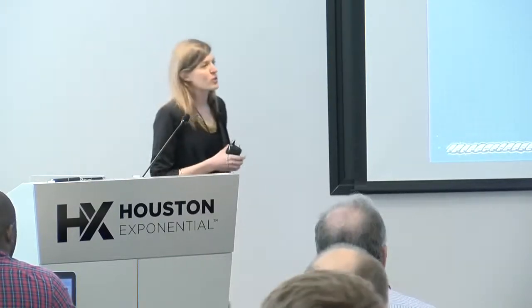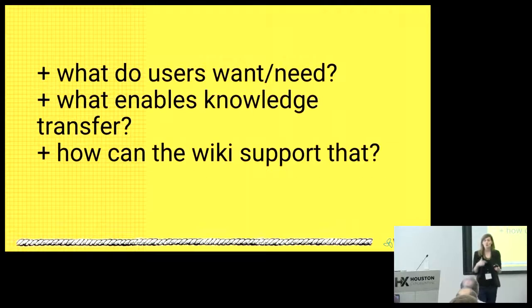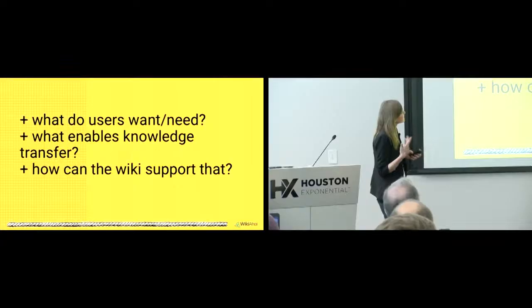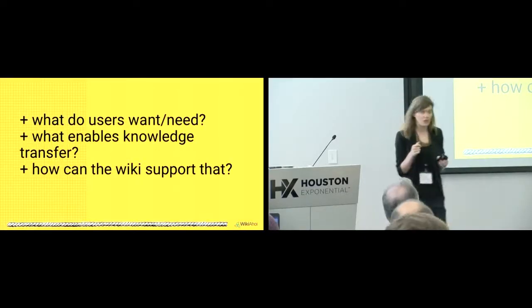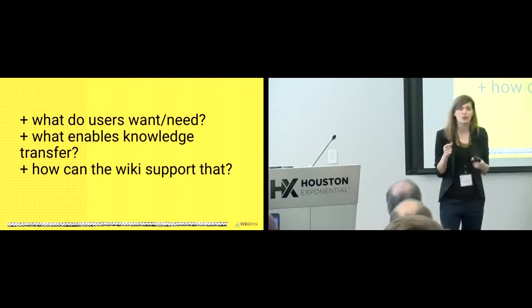I'd like to start with three questions. When working with knowledge management in a wiki — using a wiki for knowledge transfer — we ask ourselves three questions: What do our users want and what do they need, in the company context of course? What enables knowledge transfer? And how can a wiki support that?